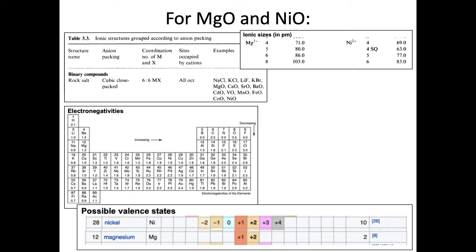Let's look at the information for magnesium oxide and nickel oxide. From your book, the ionic structures show that both are rock salt. From Chapter 3, the ionic sizes for the two cations — with six-fold coordination — are 86 picometers for one and 83 picometers for the other. The anions are both oxygen, so they're assumed to be similar in size. They're relatively close in size.